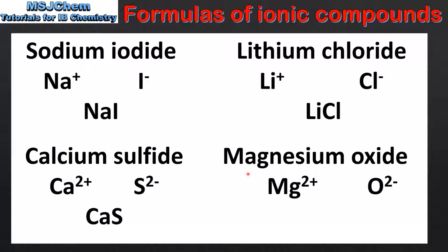Our next example is magnesium oxide, composed of magnesium 2+ ions and oxide 2− ions. To make a neutral ionic compound we need 1 of each ion, therefore the formula is MgO. In all of these examples the ratio of ions in a formula unit is 1 to 1, because the ions have charges of equal magnitudes but opposite signs.